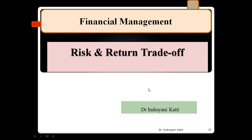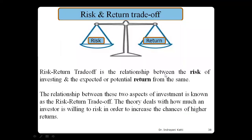The management should try to maximize the return while balancing risk. You can see that risk and return go hand in hand. If you would like to maximize the return, obviously you will have to bear the risk. The level of risk tolerance should be higher if you would like to maximize the return of an organization. Risk and return trade-off is the relationship between the risk of investing and the expected or potential return from the same.